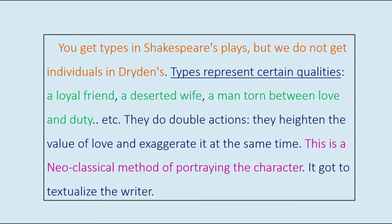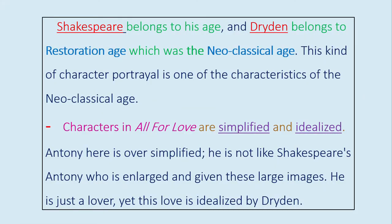Types represent certain qualities: a loyal friend, a deserted wife, a man torn between love and duty. They do double actions — they heighten the value of love and exaggerate it at the same time. This is a neoclassical method of portraying character. Shakespeare belongs to his age, and Dryden belongs to the Restoration Age, which was the neoclassical age. This kind of character portrayal is one of the characteristics of the neoclassical age.